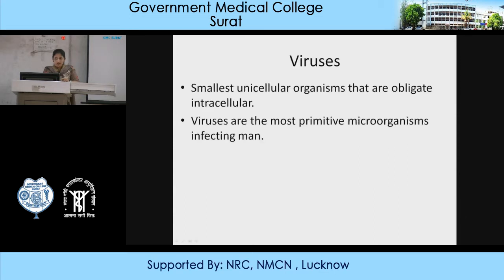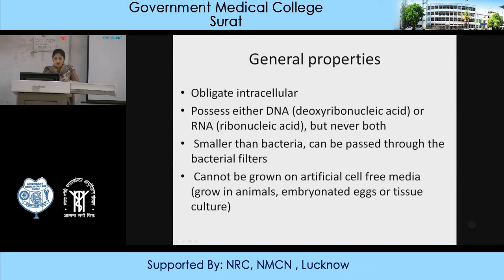Viruses are the smallest unicellular organisms and they are obligate intracellular organisms, meaning they always remain inside the cells. They are the most primitive microorganisms infecting man. They are obligate intracellular organisms, they possess either DNA or RNA but never both, and they are smaller than bacteria, which is why they can easily pass through a variety of filters.